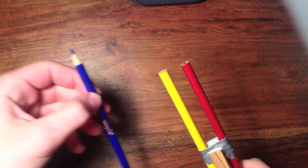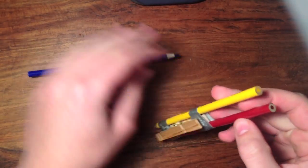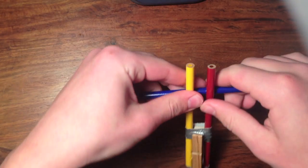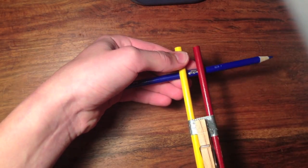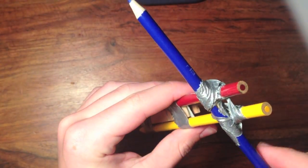The next step is to take this and tape it underneath these two pencils, about right there depending on how long your pencils are. It should look something like this.